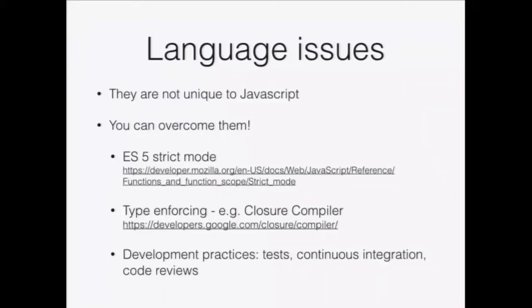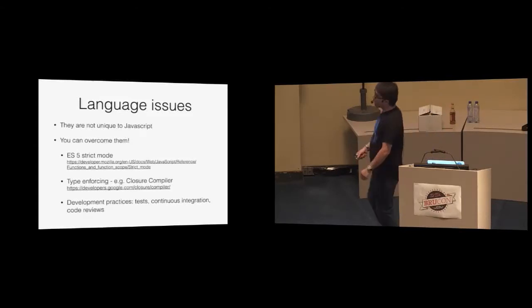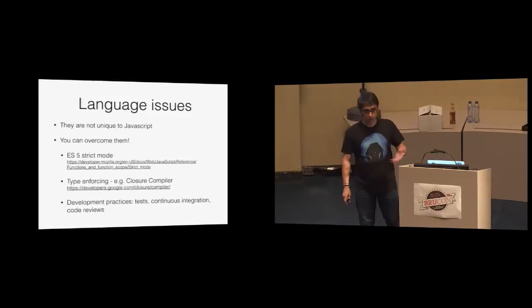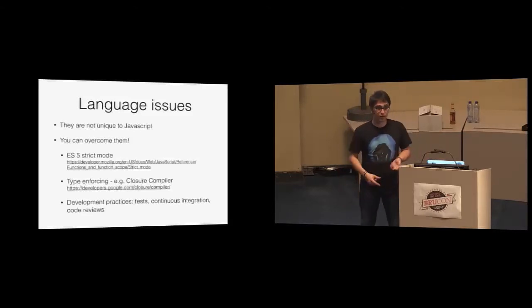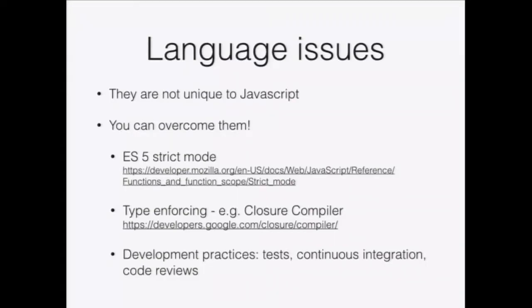To sum up the language issues: yes, JavaScript is a really tricky language, but the issues you may encounter are not unique to JavaScript. You can overcome all of them. Right now there are several attempts at enforcing strictness — like ECMAScript 5 strict mode — and type enforcement through compilers for languages that compile to JavaScript. There's also the Closure compiler, which enforces property declarations and gives you Java-like goodness. And of course the usual boring stuff that actually prevents most vulnerabilities: unit tests, continuous integration, code reviews.